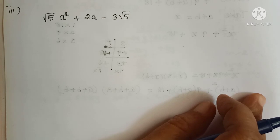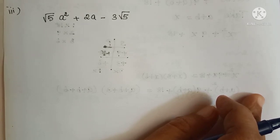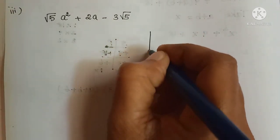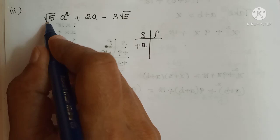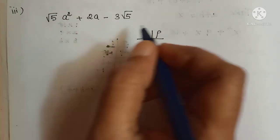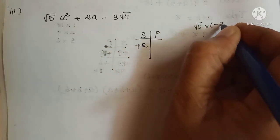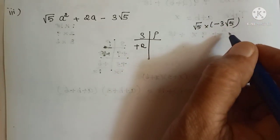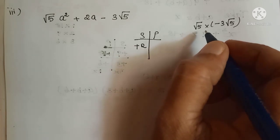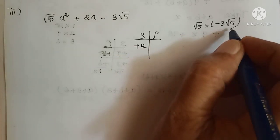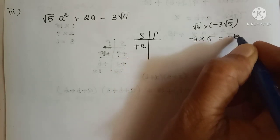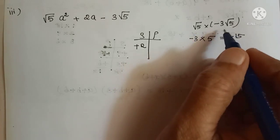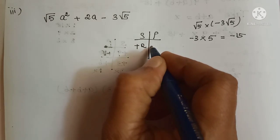Now see the third sum: root 5 a squared plus 2a minus 3 root 5. Root 5 values may look difficult but it is a very simple sum. Sum place: coefficient of a is plus 2. Product place: we take the coefficient of a squared which is root 5, so root 5 into minus 3 root 5. Multiplying: root 5 into root 5 equals 5, so the product is minus 15. The formula is root a into root a equals a.